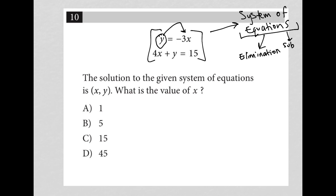Which means in the bottom equation, I can replace it. I'll just write it out normally: 4x plus y equals 15. Because I know that y equals negative 3x, I should say, not just negative 3, I can replace y with negative 3x. So I'm replacing y with negative 3x.